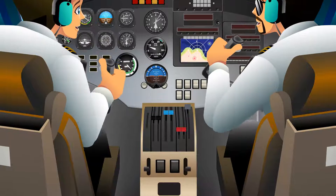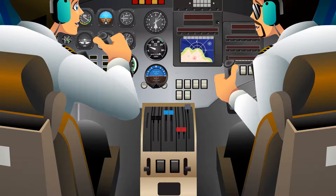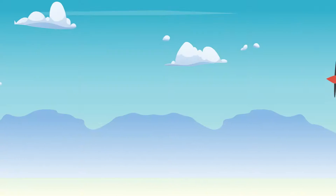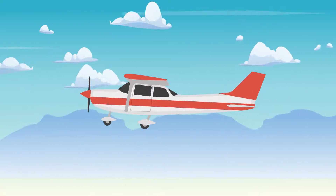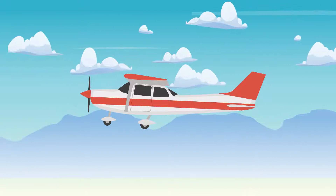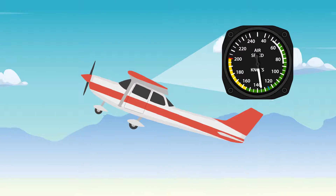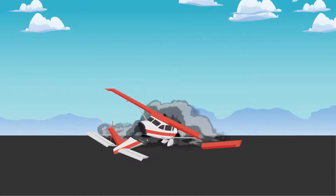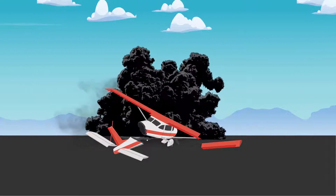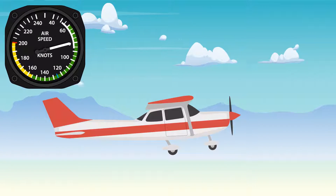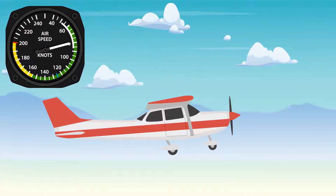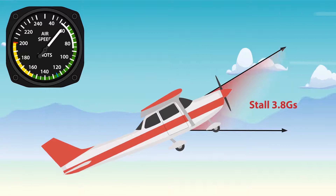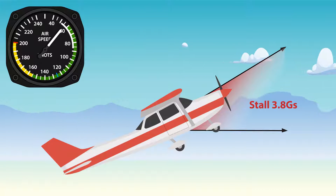The pilot should not attempt to perform full or abrupt control movements without being at or below VA. For example, if an aircraft is flying straight and level at a speed above VA and the pilot were to move the elevators quickly to the full-up position, it might cause damage to the aircraft. Conversely, if the aircraft was flying at a speed at or below VA, the aircraft would stall before receiving any structural damage.